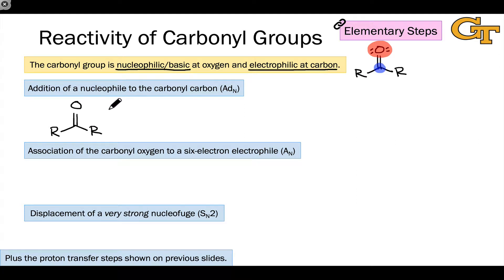This manifests itself in the addition of nucleophiles to the carbonyl carbon. So the AD sub N elementary step, the addition of a nucleophile to a polarized pi bond, is far and away the most important elementary step of neutral carbonyl groups. In fact, the same is true of protonated carbonyl groups. Addition to the carbonyl carbon is an extremely common and important step of this class of molecules.